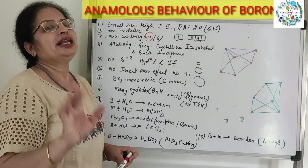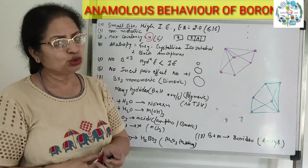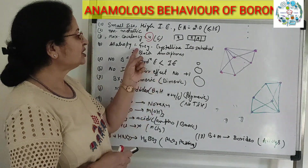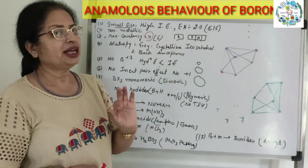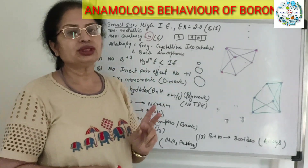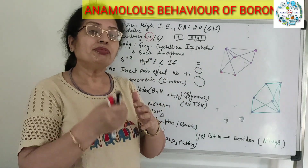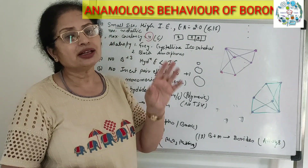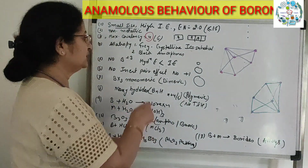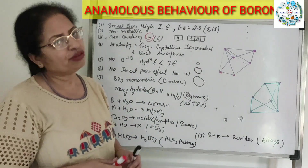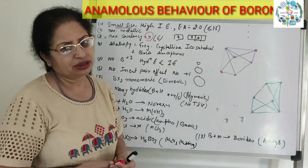Boron is the only element in the group which shows allotropy, meaning in nature it occurs in two different allotropic forms. The first is a grey-colored crystalline icosahedral form — it is crystalline, inert, and has a very high melting point, requiring more energy to melt. The second, the black form, is amorphous and is reactive.